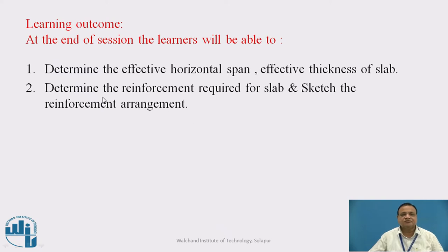Learning Outcomes: At the end of the session, the learners will be able to determine the effective horizontal span and the effective thickness of the slab. They will also be able to determine the reinforcement required for the slab, that is main reinforcement and distribution steel, and sketch the reinforcement arrangement.